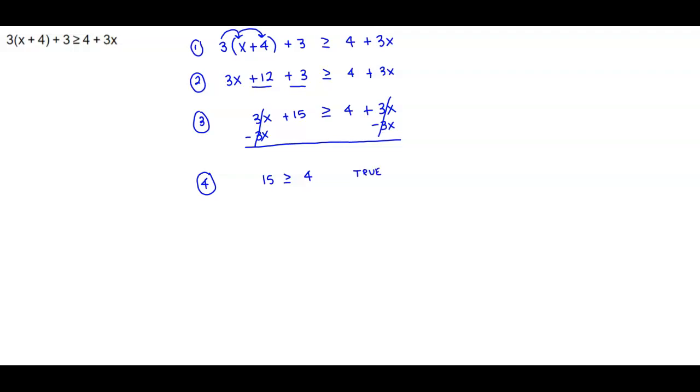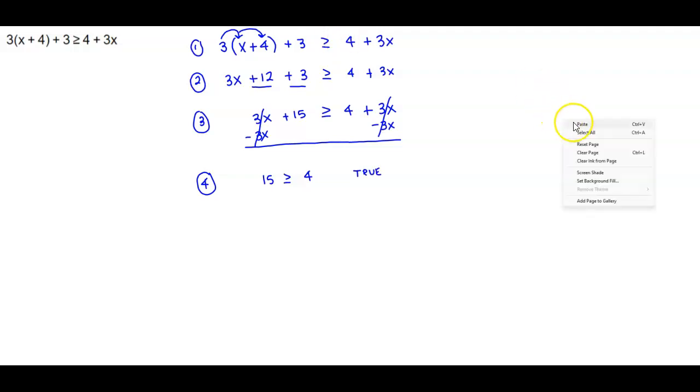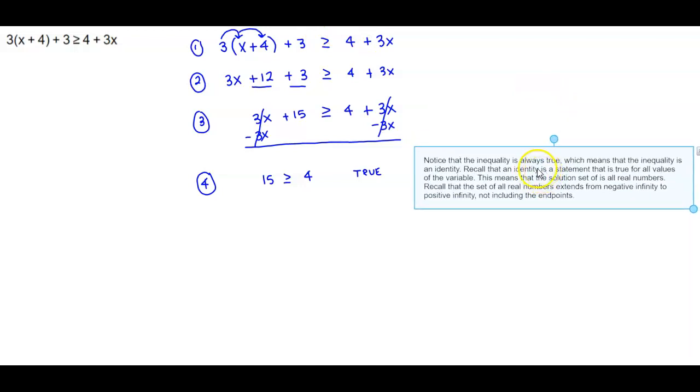So what does that tell us? The inequality is always true, which means that the inequality is an identity. And recall that an identity is a statement that is true for all values of the variable. And this means the solution set of that particular equation is all real numbers.